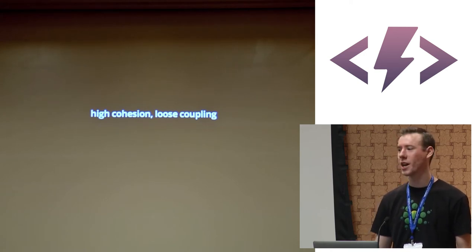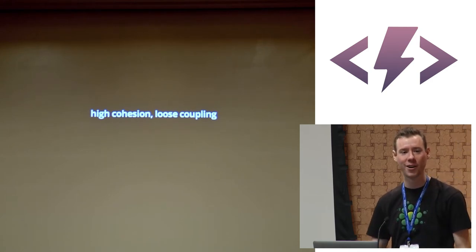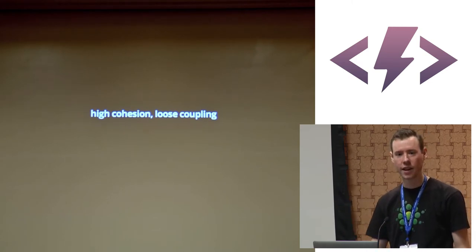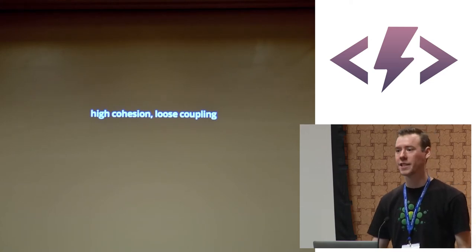For years people just stuck everything in one file — a thousand-line file with all your jQuery, included in a script tag. That's highly cohesive but not loosely coupled; you couldn't tease it apart or test it. Now with RequireJS and Browserify, people break things into modules, getting loose coupling — but are they cohesive, or are things just sprayed across the project?